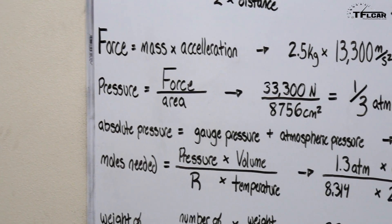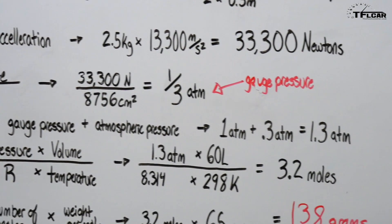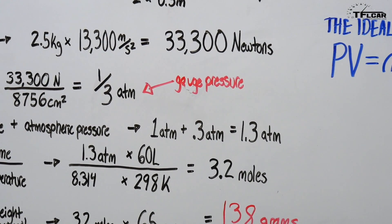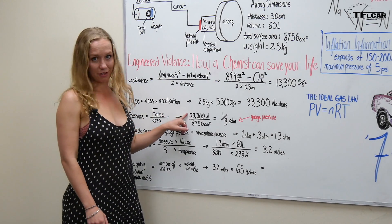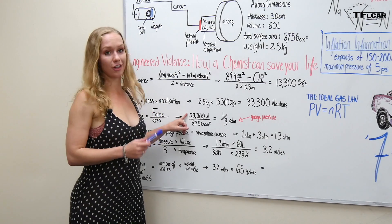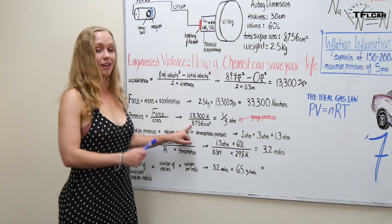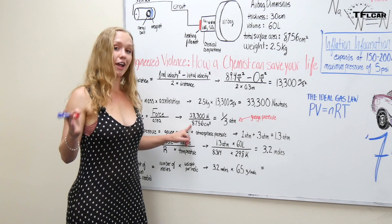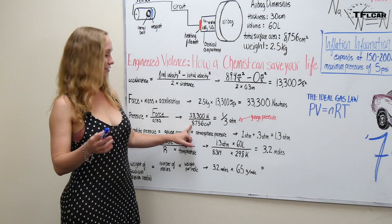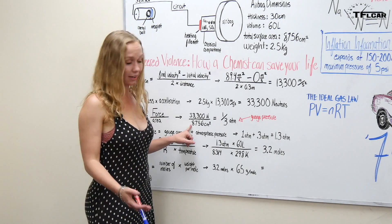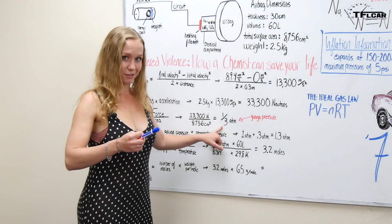From acceleration we found force and from force we can find the pressure needed to inflate the airbag. So pressure is equal to force divided by area. So we take the force that we found above which is 33,300 newtons and then just simply divide it by the area of your airbag which is approximately 8,756 centimeters squared for a 60 liter airbag and then that is equal to 0.3 atmospheres.